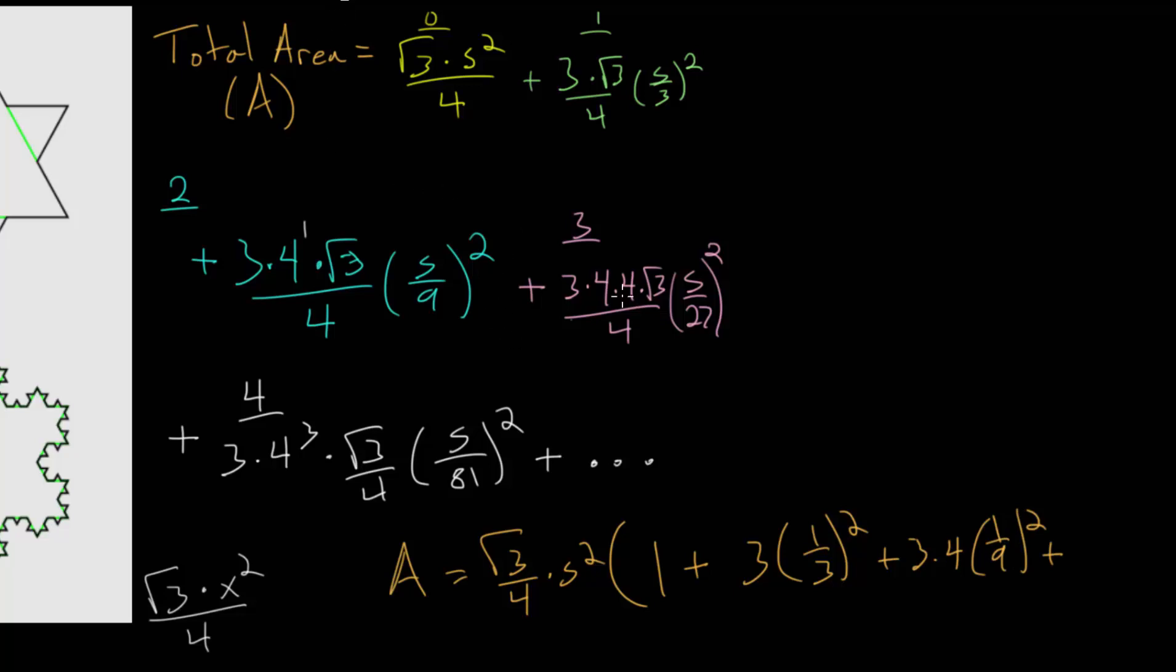And for the next one we pulled out everything but the 3 times 4 times 4, which I'll write as 3 times 4 squared, and we would still have 1 over 27 squared. And this sum will continue forever.